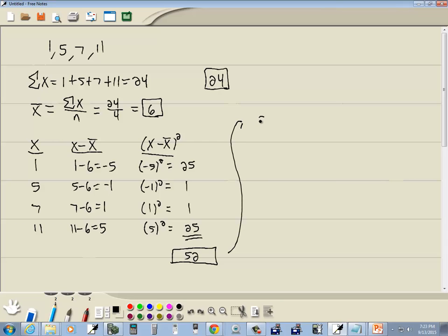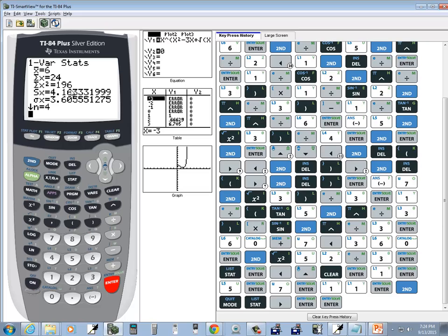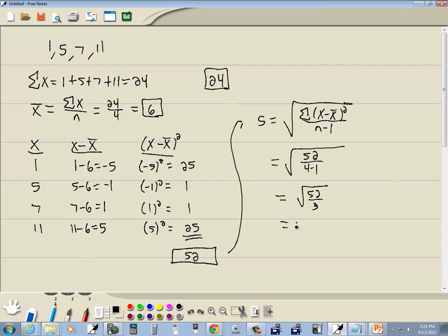Now, our sample standard deviation is going to equal the square root of the sum of x minus x bar squared divided by n minus 1. So we're going to have 52 divided by, and n is 4. We've got 4 numbers. So we'll have 4 minus 1, or square root of 52 over 3, which equals 4.16 rounded to two decimal places. And this, you'll have to input into the computer.